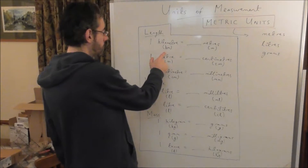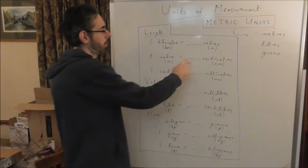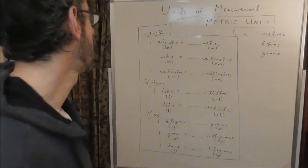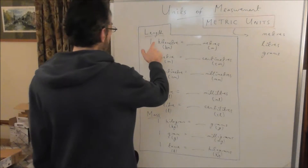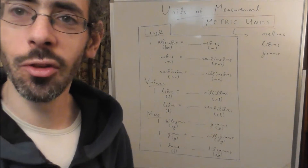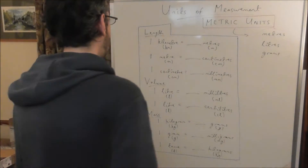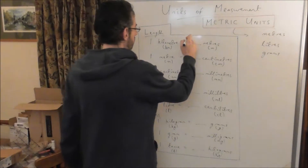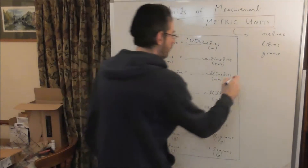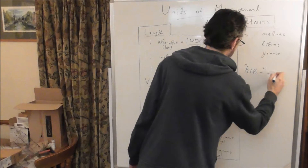Under each measurement word I've put its abbreviation. So the abbreviation for kilometre is km, the abbreviation for metres is m, and so on. Let's start with length. One kilometre — how many metres is that? Well, kilo at the start of a measurement word means a thousand. So a kilometre is literally a thousand metres. I'll write that on the side: kilo means a thousand.